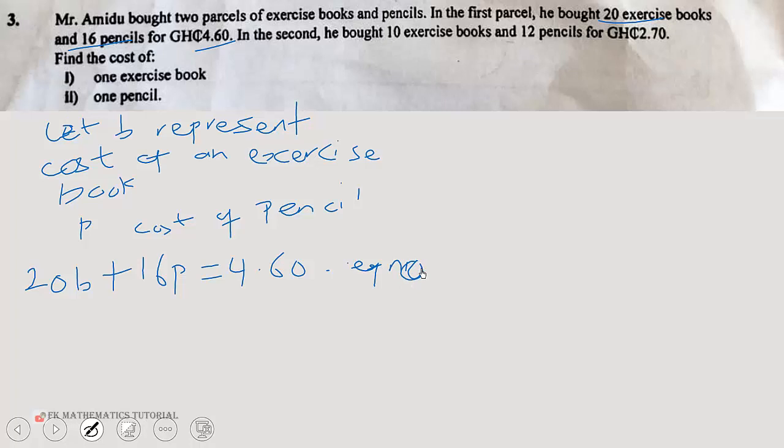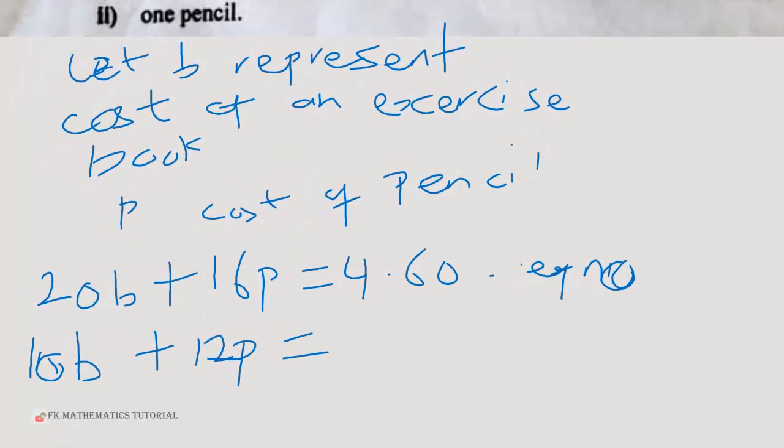In the second parcel, he bought 10 exercise books. So the cost of 10 exercise books would be 10 times B, and the cost of 12 pencils will be 12 times P. And all this is amounting to 2.70 cedis. So we can call this equation two.